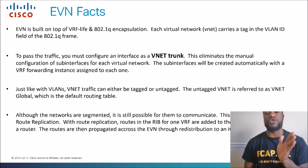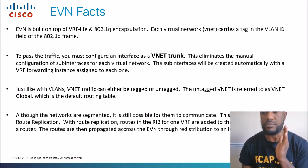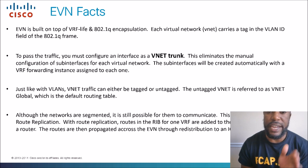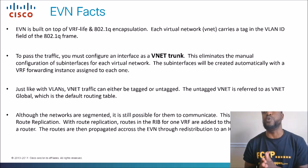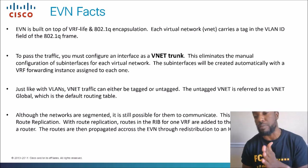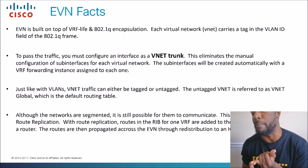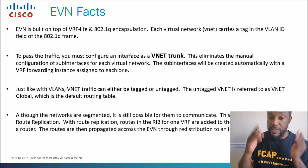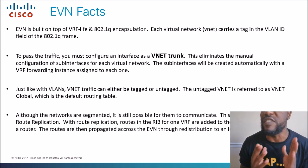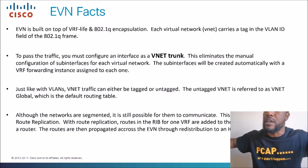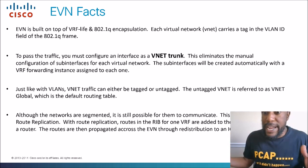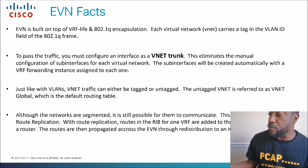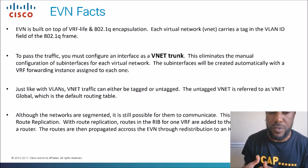Just like with VLANs, VNet traffic can be either tagged or untagged. Untagged VNet is referred to as VNet global, which is the default routing table. Although networks are segmented, it's still possible for them to communicate. This is useful for regulatory compliance — like HIPAA rules you need to abide by, or the Sarbanes-Oxley Act. If you're familiar with accounting and compliance rules you have to follow, EVN solutions are perfect for that because you can separate your traffic and keep your protected information protected. This is done through route replication — if you want to share some information from other routing tables, you can do this through route replication.